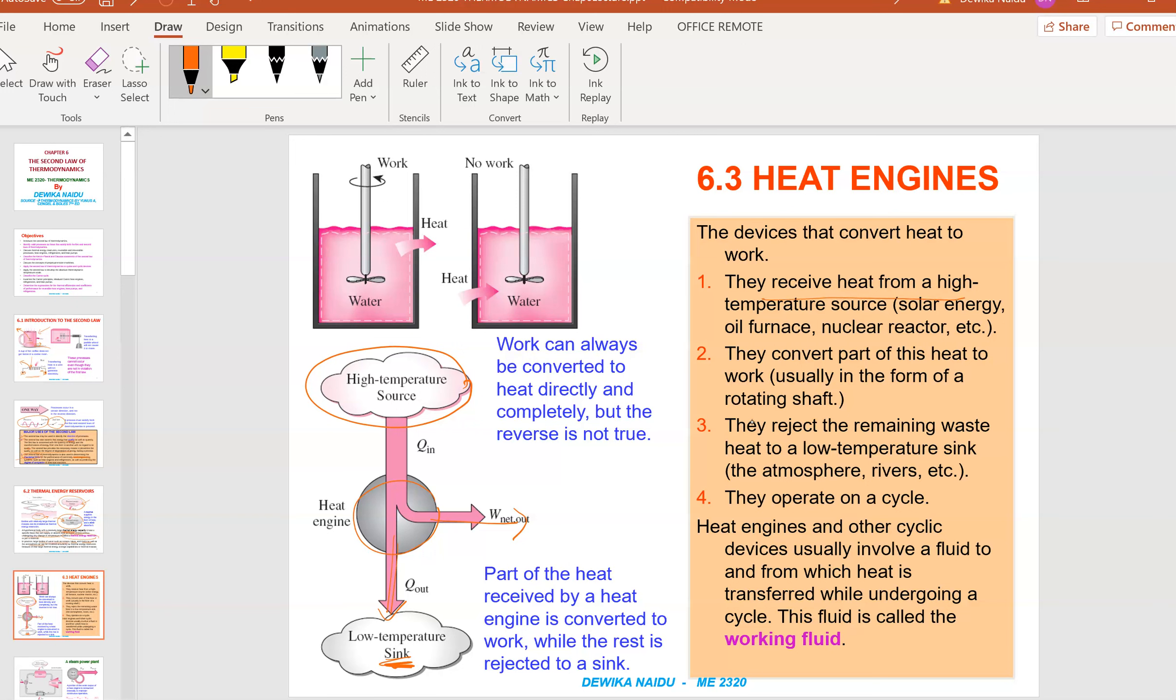Heat engines receive heat from high temperature sources—examples include solar energy, oil furnace, nuclear reactor. They convert part of the heat to work, usually using a rotating shaft which is connected to a turbine, and they also reject remaining waste to the low temperature sink, for example to the atmosphere or to the river. They operate on a cycle, which means from the initial, go through processes, and come back to the initial and repeat itself. Heat engines and other cyclic devices usually involve a fluid as the working fluid—it can be gas, it can be liquid, it can be anything.